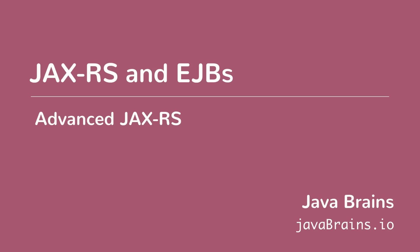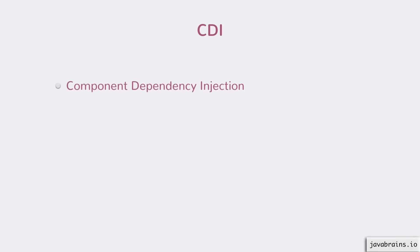The way EJBs are wired in Java EE is using something called CDI — Component Dependency Injection. It gets a lot of inspiration from the Spring dependency injection or the Guava dependency injection frameworks. It basically lets you inject bean instances using annotations rather than look up instances of beans using some kind of method or directory.